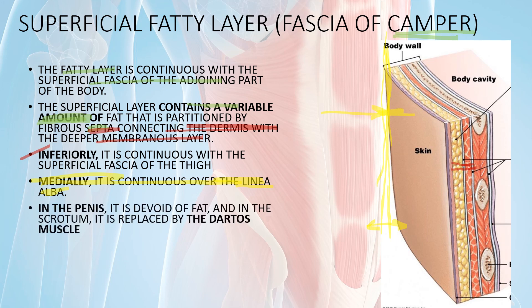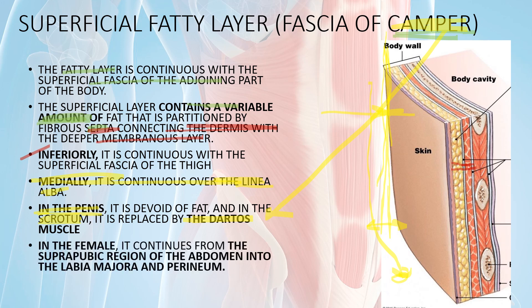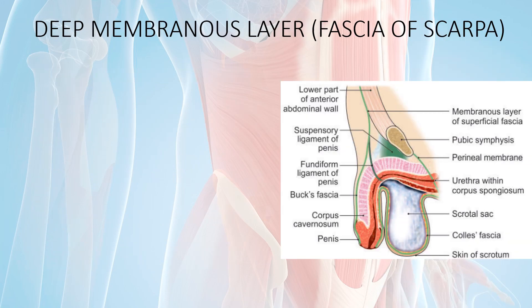Near the penis, the superficial fascia fat layer is absent. In the scrotal region, Camper's fascia forms the dartos muscle — a subcutaneous muscle. In the female, it continues into the labia majora.